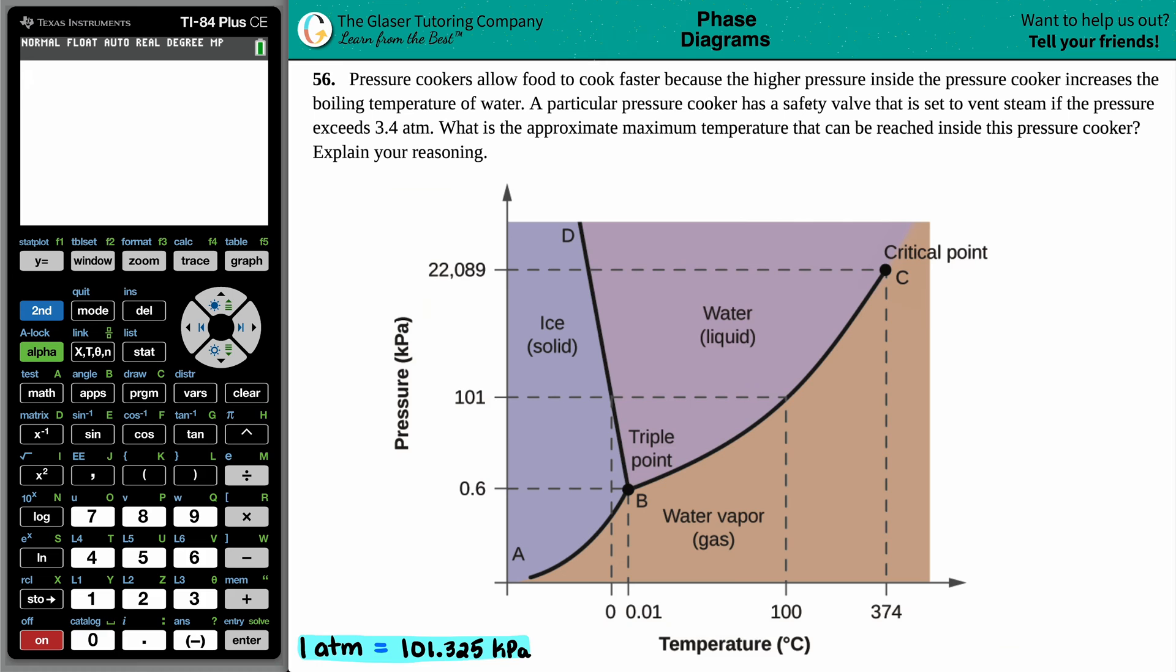A particular pressure cooker has a safety valve that is set to vent steam if the pressure cooker exceeds 3.4 atm. What is the approximate maximum temperature that can be reached inside this pressure cooker? And then explain your reasoning.